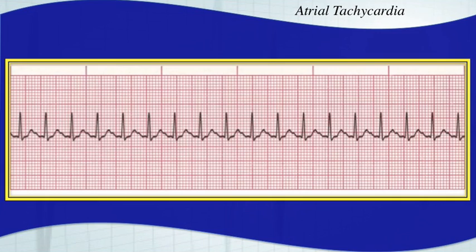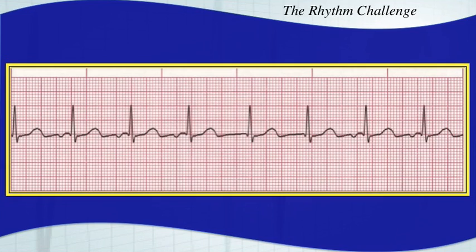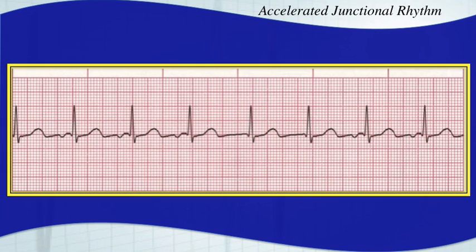As soon as that atrial tachycardia comes off the screen, take a good look at this one. The answer is an accelerated junctional rhythm. You do have inverted P waves here with a narrow QRS complex, and then those go away for a couple beats there.